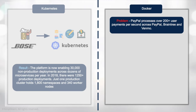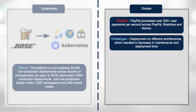Now let's look at Docker and a similar problem. The case is PayPal, which processes over 200 payments per second across all of their products. PayPal doesn't just have PayPal — they also have Braintree and Venmo. The challenge was that they had different architectures, resulting in different maintenance cycles, different deployment times, and overall complexity spanning a decades-old PayPal architecture all the way through to a modern Venmo architecture.